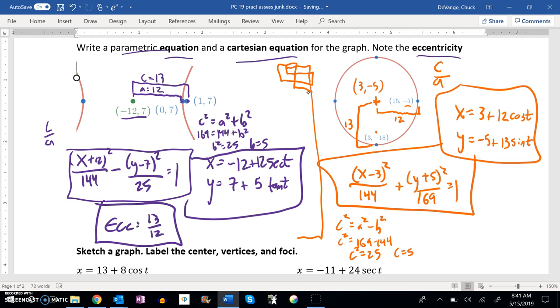So c equals 5. So my eccentricity must be 5 over 13, which is less than 1, which it should be for an ellipse.